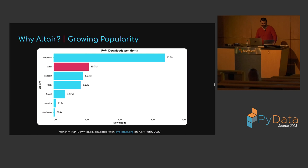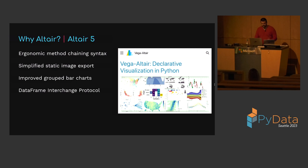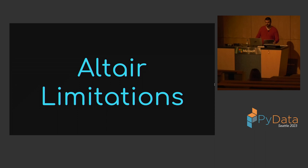Here's a simple example of an interactive bar chart with cylinder count on the x-axis and average miles per gallon on the y-axis, supporting interval selection with a horizontal red rule overlaying the average miles per gallon of all selected cars. Altair is the second most downloaded Python visualization library from PyPI behind only matplotlib. The first release candidate of Altair 5 is now available, with improvements to method-chaining syntax, dramatically simplified static image export, improved grouped bar charts, and support for non-Pandas dataframes like Polars via the dataframe interchange protocol.